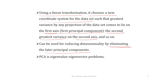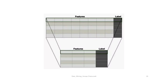PCA is an eigenvalue-eigenvector problem, so we make use of eigenvalues and eigenvectors to employ principal component analysis. Graphically, the principal component problem can be explained as follows: suppose you have 8 features and you want to reduce the number of features — say to 3. That is the principal component problem.